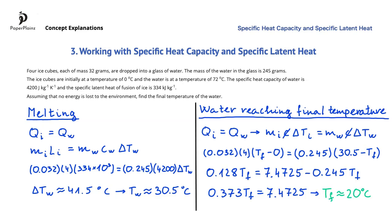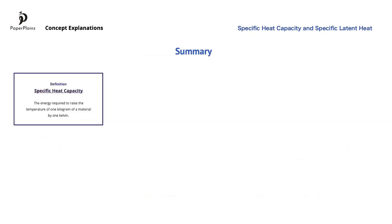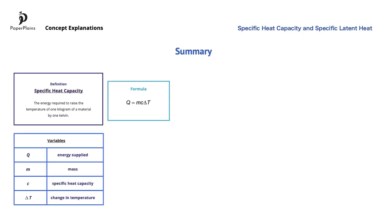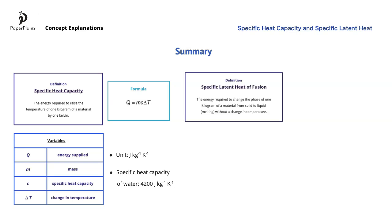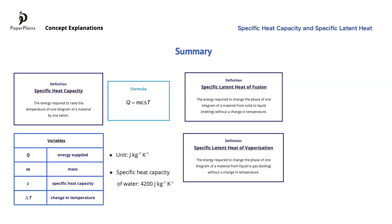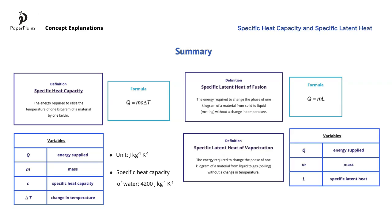Let's summarize what we have learned in this video. We began by defining specific heat capacity and looking at a formula including specific heat capacity along with the variables. We noted that the unit of specific heat capacity is joules per kilogram per Kelvin, and that the specific heat capacity of water — a common value in exam questions — is 4200 joules per kilogram per Kelvin. Next, we moved on to specific latent heat, and defined the specific latent heat of fusion and the specific latent heat of vaporization. We saw the formula for specific latent heat along with the variables, and concluded that the unit of specific latent heat is joules per kilogram.